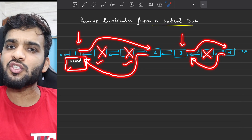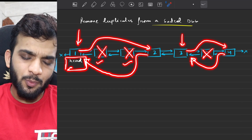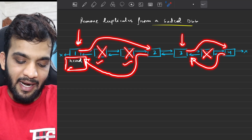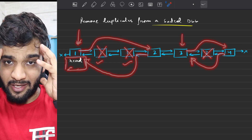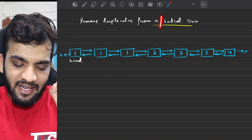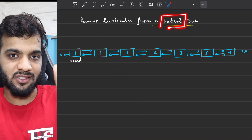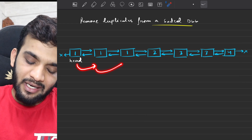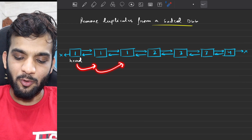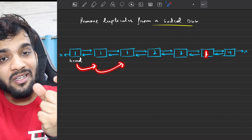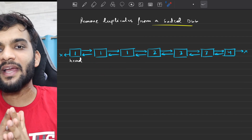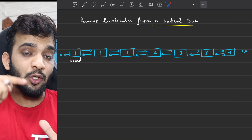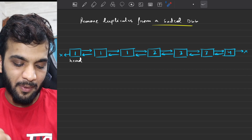Obviously, the head will not change because this will be the first occurrence. After that, you will find the duplicates. And the duplicates, if you carefully observe, since it is a sorted doubly linked list, the duplicates will always be in a contiguous manner. We will take the advantage of this continuity and try to delete all the duplicates.